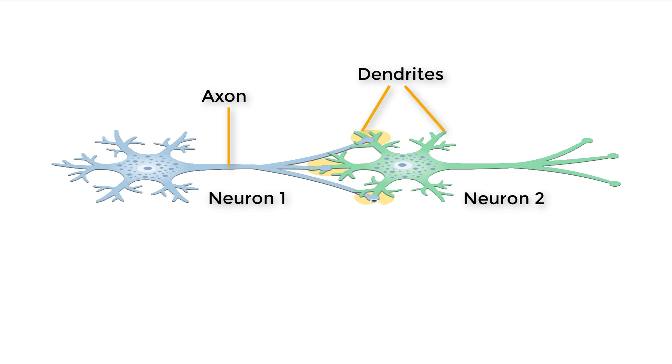The dendrites are at the receiving end while the axon is the sending extension of the neurons. Information is transferred from the axon of one neuron to the dendrite of the next neuron. In essence, all information comes into a neuron through the dendrites, flows through the neuron, and then leaves to go to the next neuron through the axon.